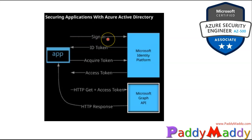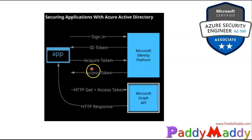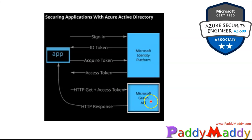When a user signs in through the application, the Microsoft identity platform grants an identity token to the application. The app then requests an access token specific to the identity provider. Once the token is submitted, the app sends an HTTP request with the access token and API information — such as the Microsoft Graph API — to access Azure AD, and the access information is sent back to the application.